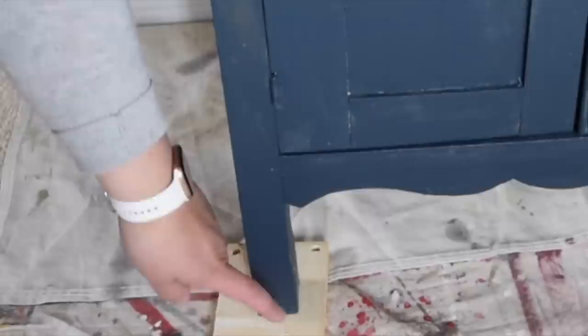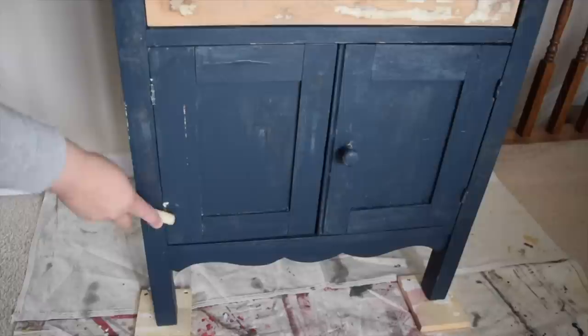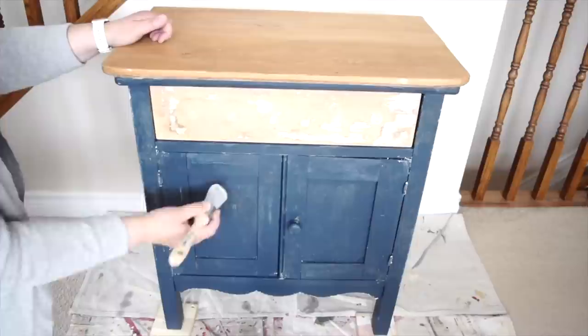I like to use little wooden blocks to raise the piece up off the tarp whenever I'm painting. I've popped this old candle into the microwave until it's soft and I'm just going to rub it on the edges of the piece and over the hardware.